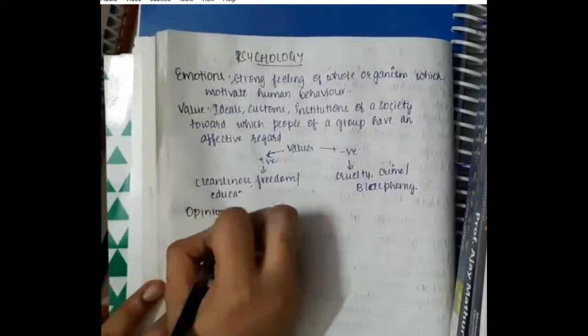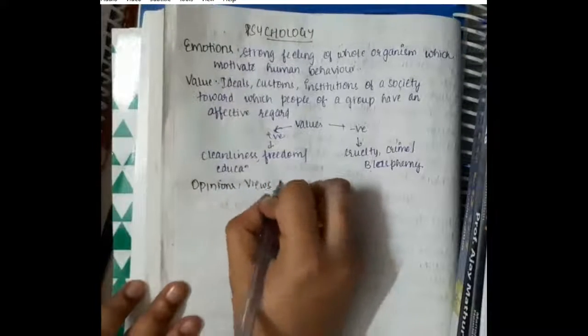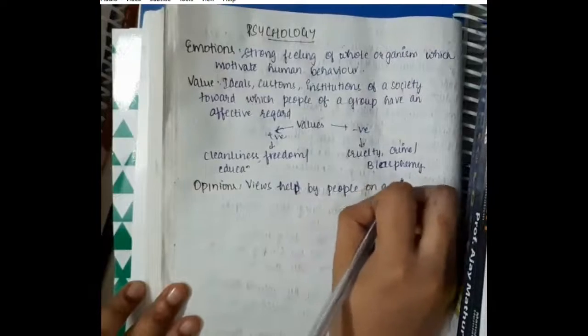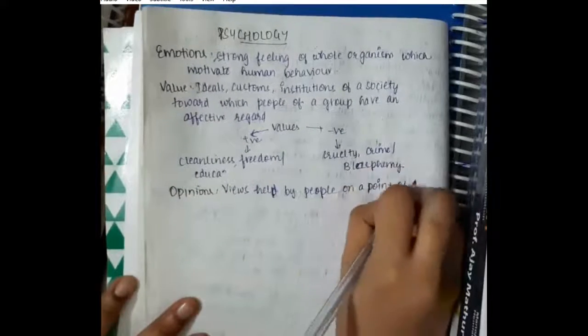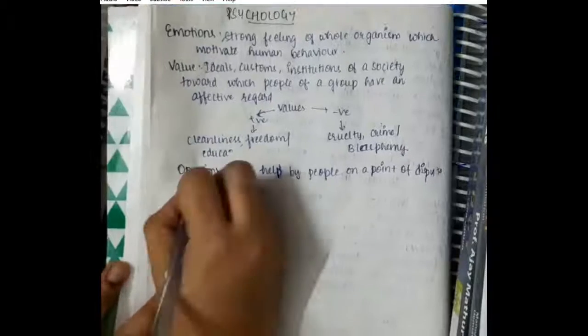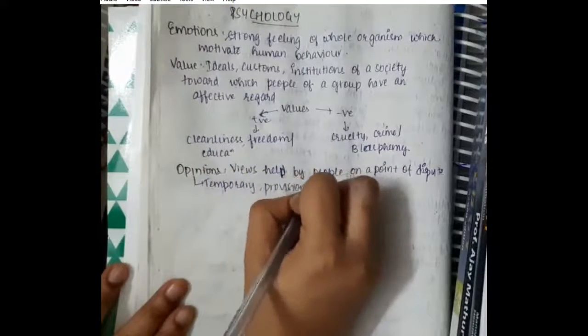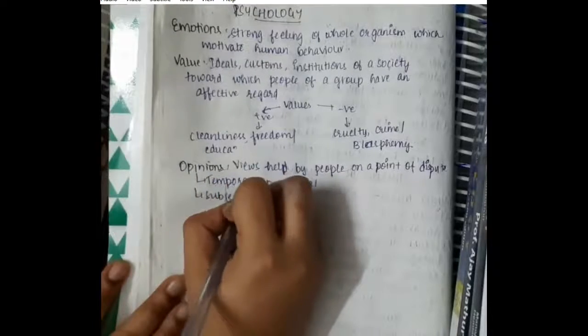Then we have opinions. Opinions are the views held by people on a point of dispute. These are temporary or provisional and can be subjective in nature.